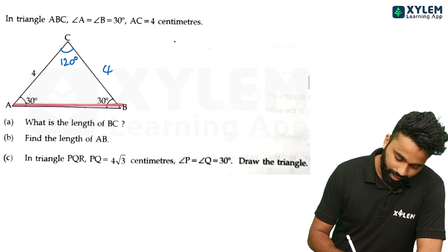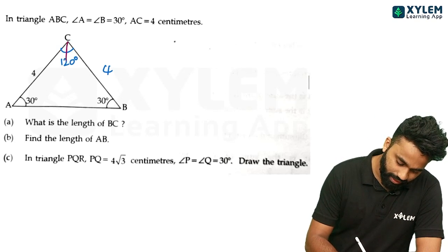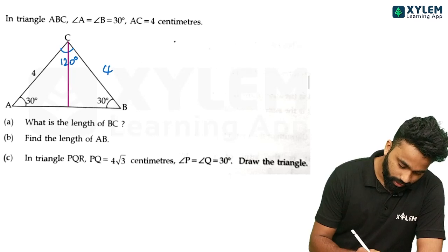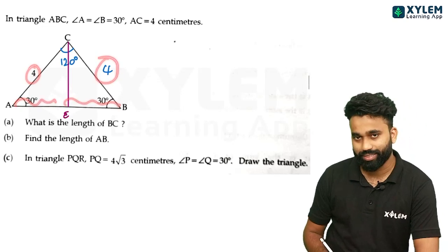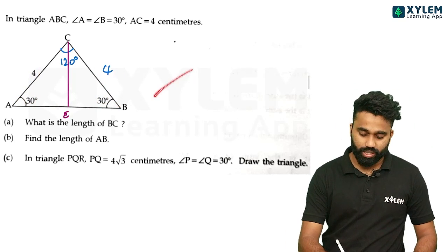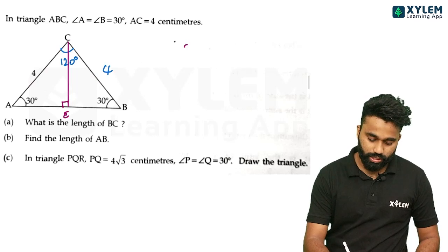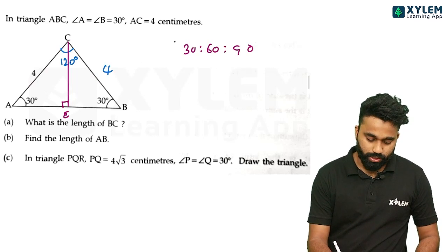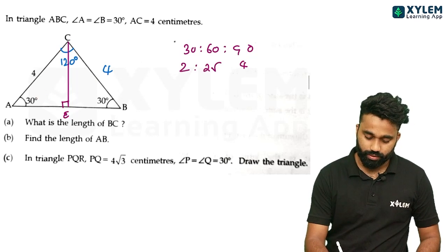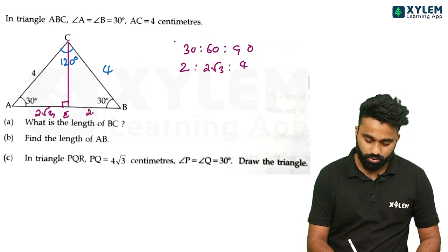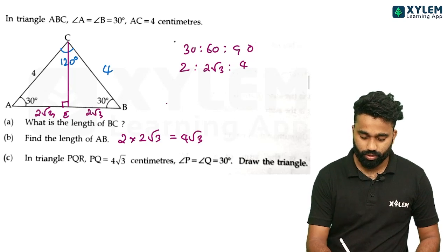This is the length of C. This is the isosceles triangle. Let's sum up: 30 to 60 is 90. Opposite of 90 is 4. Opposite of 30 is 2. Opposite of 60 is 2√3. So AB is equal to 2√3, that is equal to 4√3.